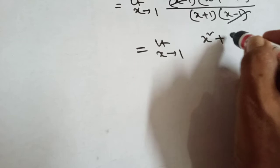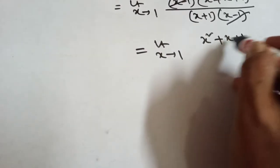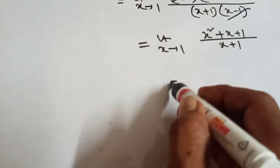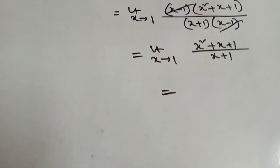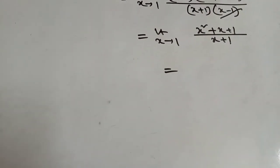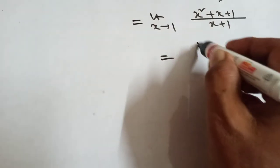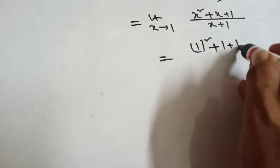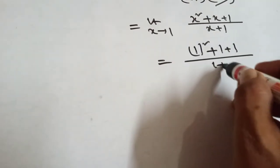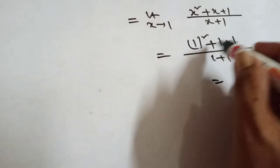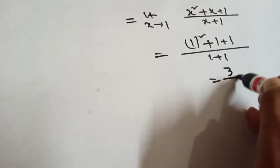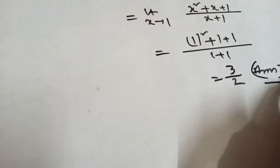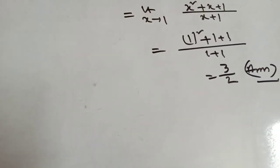The remaining expression is limit x tends to 1 of x square plus x plus 1 by x plus 1. Now put x equal to 1: 1 square plus 1 plus 1 by 1 plus 1, that means 1 plus 1 plus 1 equals 3, divided by 2. So the answer is 3 by 2.